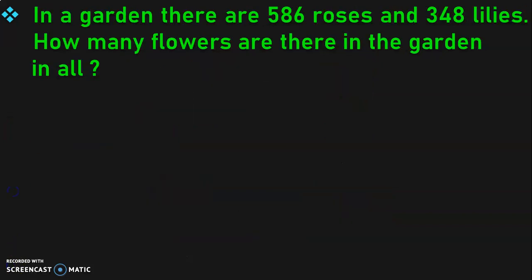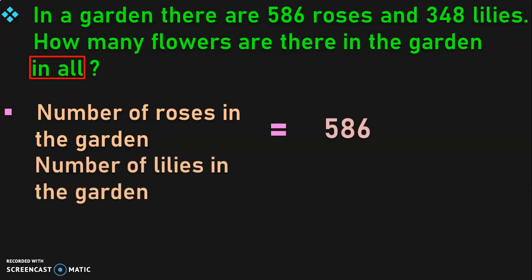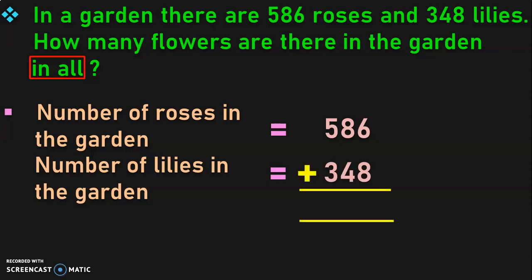Let us do the next example. In a garden, there are 586 roses and 348 lilies. How many flowers are there in the garden in all? The keyword here is 'in all', which indicates we have to find out the total number of flowers in the garden using the addition operation. Write down the statements: number of roses in the garden is equal to 586. Number of lilies in the garden is equal to 348. Now we have to perform the addition operation.